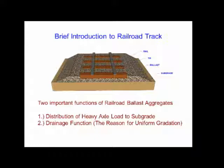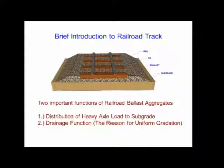This sketch shows the conventional ballasted railroad track. In North America there are four components: rail, tie, ballast, and subgrade. The main part we are interested in is the ballast layer. There are two functions of the ballast layer: one is the distribution of axle loads coming from trains, and the other is drainage. Drainage is very important, which is why we typically use uniform or open gradation for the ballast layer.